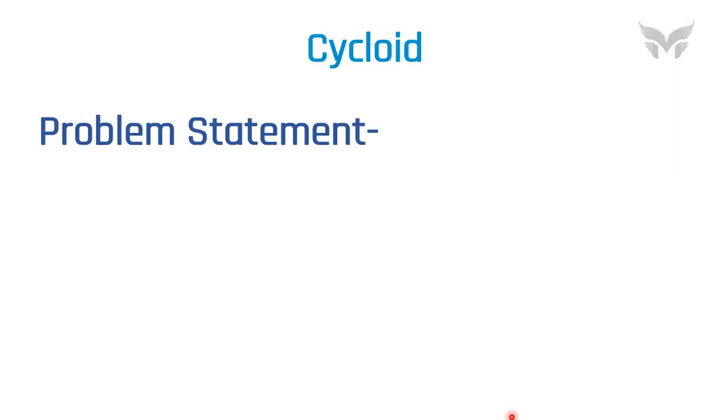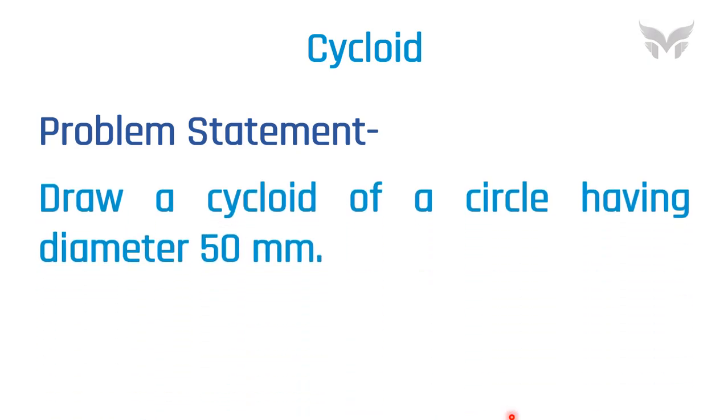Now, let's have a look at the problem statement. Draw a cycloid of a circle having diameter of 50 mm. Let's see how to draw. First up, draw a circle of a given diameter. Here it's 50 mm.